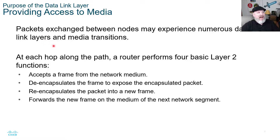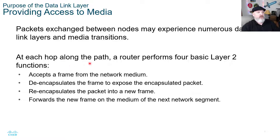Providing access to media: packets exchanged between nodes may experience numerous data link layer and media transitions. At each hop along the path — each time it stops at a router or switch — the router performs four basic layer 2 functions: it accepts a frame from the network medium, de-encapsulates the frame to expose the encapsulated packet, re-encapsulates the packet into a new frame, and sends that new frame onto the medium to the new network segment.